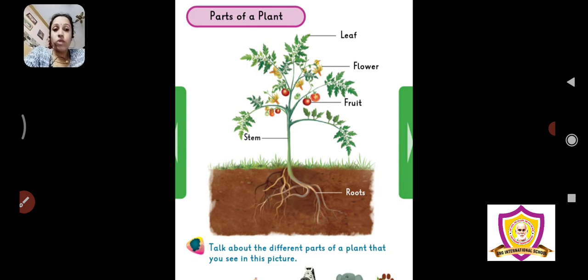Now, then we learnt what are soils, different types of soil we have learnt. We have learnt about the black soil, the red soil and the brown soil. Now we are going to learn about the parts of the plant.